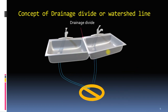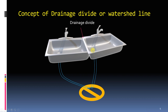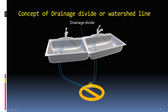Now consider two wash basins emptying into the same outlet. Water which is falling on one wash basin does not go to the other wash basin. However, all the water from the two basins falls into the same drain through different pipes. These wash basins are analogous to two catchment areas or watersheds. You can combine these into one drainage basin. There is a line which separates these wash vessels, which we call a drainage divide, or watershed line, or ridge.